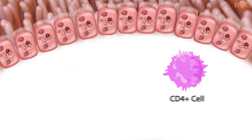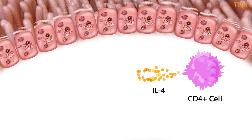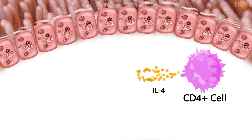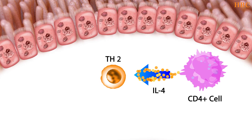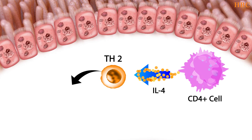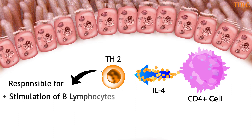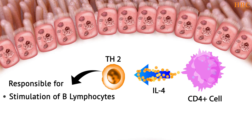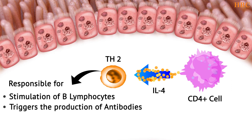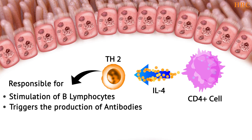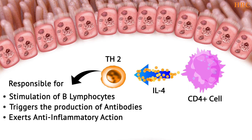In the presence of IL-12, CD4+ cells get converted into T helper cells 2. T helper cell 2 is responsible for stimulation of B lymphocytes and triggers the production of antibodies. It also exerts an anti-inflammatory action.